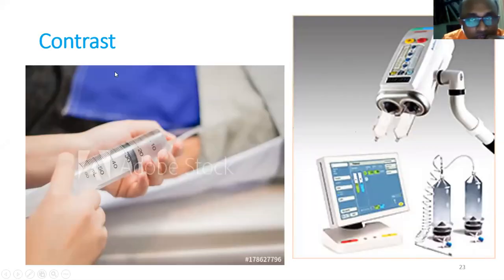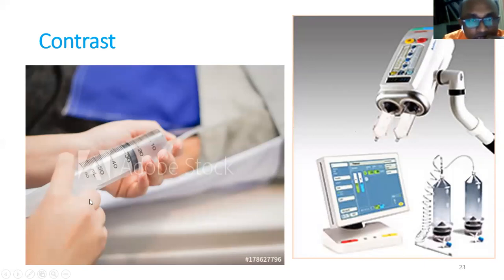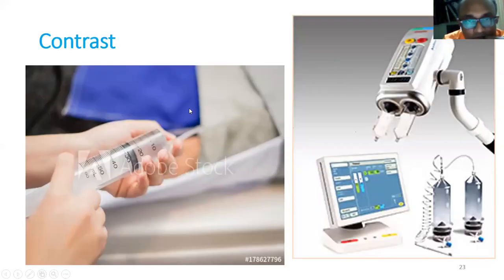Regarding contrast: in government institutions, an auto-injector will often not be available and people give manual contrast injections. Manual contrast injections should be avoided because when you ask for the arterial phase, you should use an auto-injector. With an auto-injector, you can achieve a good arterial phase. Now let us move to MRI brain sequences in stereotaxy.